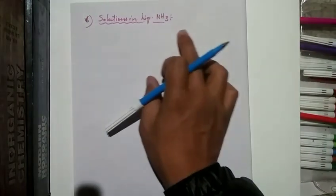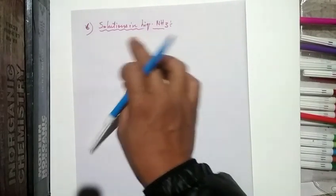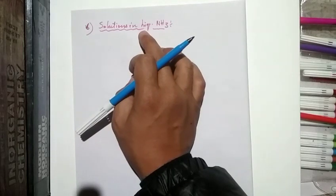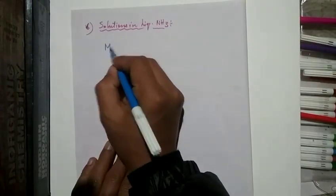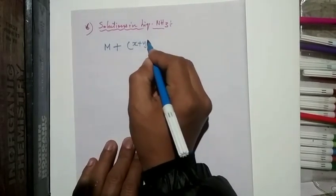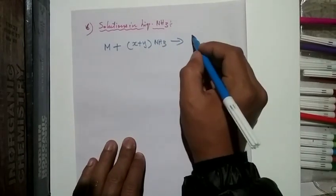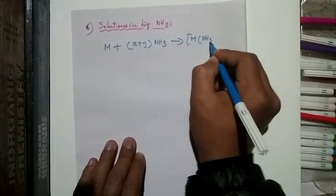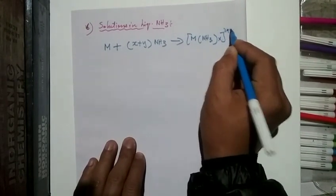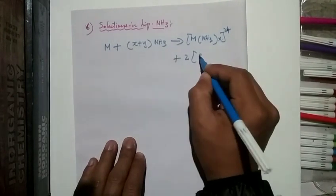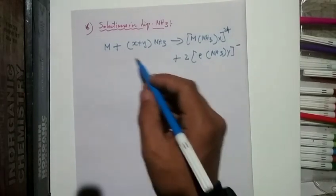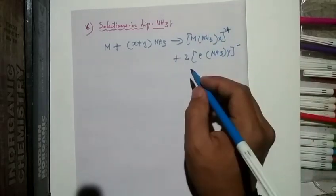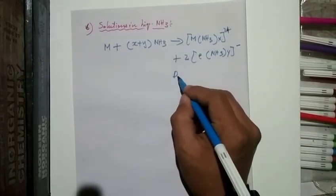Lastly, solution in liquid ammonia. Like Group 1 elements, alkaline earth metals are soluble in liquid ammonia. The reaction is: M + x moles of NH₃ → [M(NH₃)ₓ]²⁺ + 2 ammoniated electrons (e⁻·NH₃). After dissolving they give a deep blue-black color.